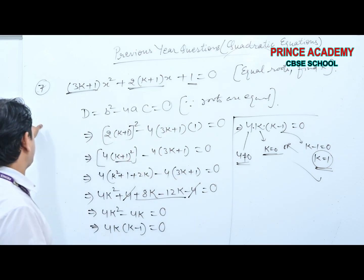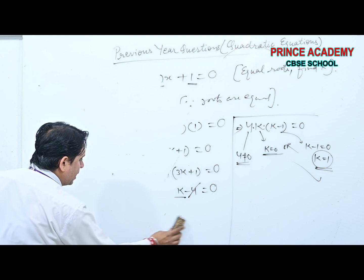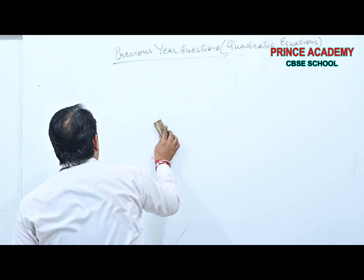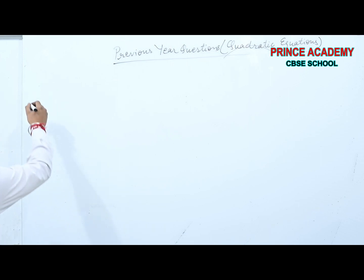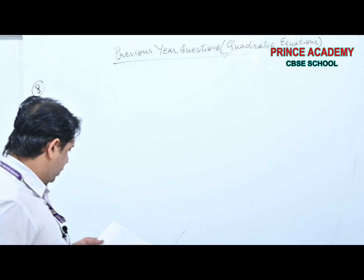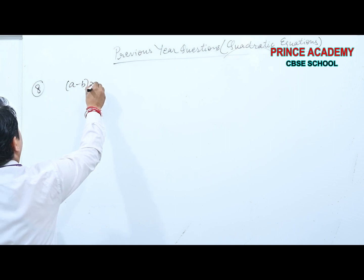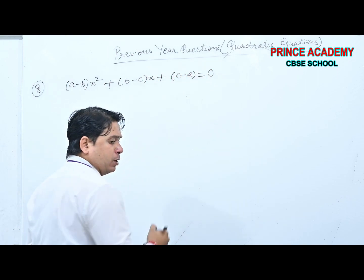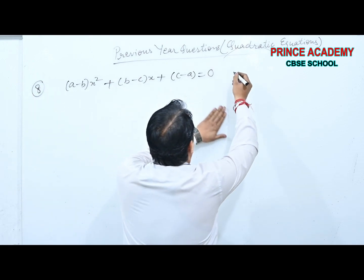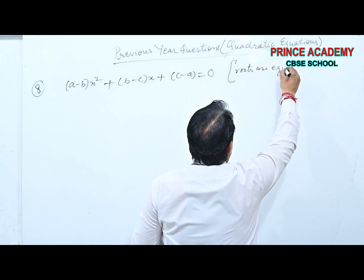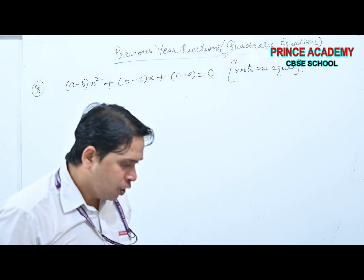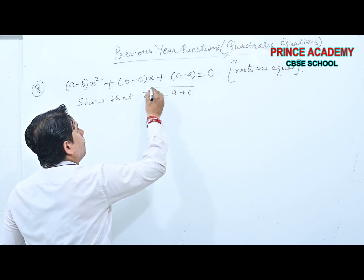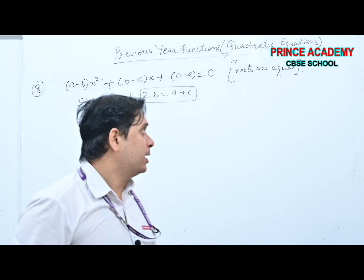Question 8 (slightly deeper level): Given (a−b)x² + (b−c)x + (c−a) = 0 with equal roots. Show that 2b = a+c. (Sometimes stated as: show that a, b, c are in A.P. — we'll cover that in the next chapter.)